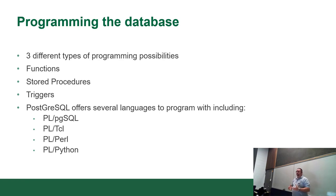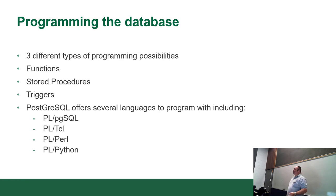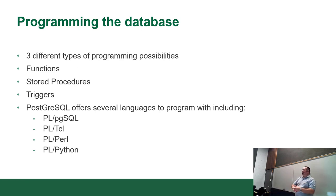When you program the database, most database servers give you three types of programs you can write. You can write your own functions. Functions in a database are pretty much the same idea as in Java, except you don't have classes wrapped around them. You know how you use aggregate functions — average, min, max — or string functions like lower or upper? You can actually write your own functions to do custom logic. If you want to generate passwords on the fly, or assign a customer some unique piece of information, you could write a function for that.